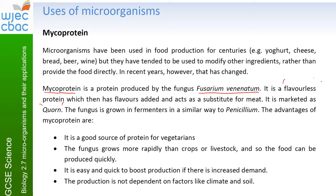Mycoprotein is a flavorless protein that some people don't particularly like, but it can be made into various different textures — as mince for chili or spaghetti bolognese, shaped into sausages, even shaped into bacon rashers. It's supposed to be a substitute for meat, so it's high in protein and is often marketed under the brand name Quorn. The fungus is grown in fermenters in a similar way to Penicillium, so if asked how mycoprotein is made, it's pretty much the same sequence of events — just using Fusarium venenatum instead of Penicillium notatum.